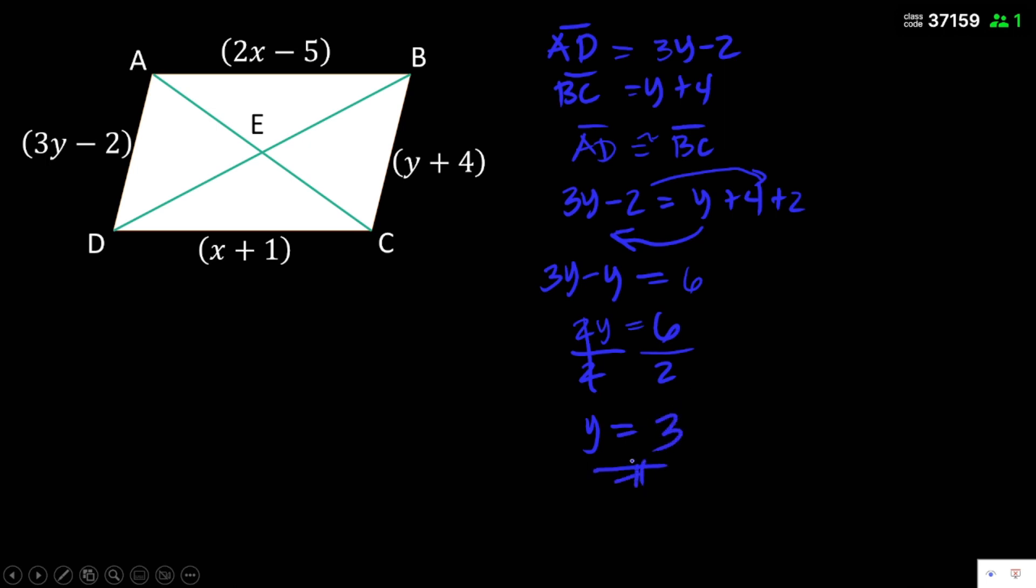Now, the value of y is 3. Now, what is the measurement of line segment AD? Just substitute the value of y to the given expression. So, 3 times 3 minus 2. 3 times 3 is 9, minus 2, then equals to 7. AD is equal now to 7.